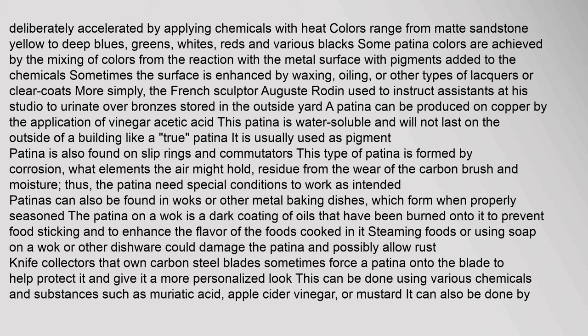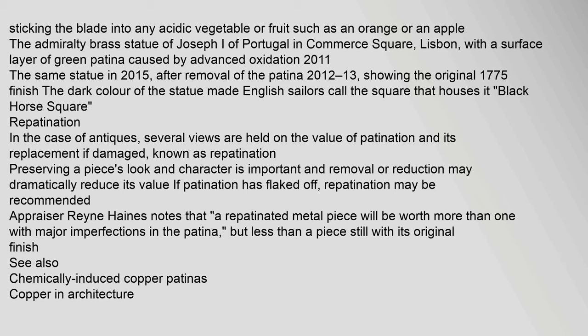Patina is also found on slip rings and commutators, formed by corrosion, wear from carbon brushes, and moisture, requiring special conditions to function as intended. Patinas can also be found in woks or other metal baking dishes when properly seasoned — the patina on a wok is a dark coating of burned oils that prevents food from sticking and enhances flavor. Steaming or using soap on a wok could damage the patina. Knife collectors with carbon steel blades sometimes force a patina using muriatic acid, apple cider vinegar, mustard, or acidic fruits such as oranges or apples.